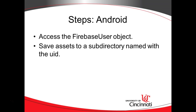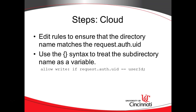The steps to create this: we need to access the Firebase User object on our application, which was provided when we created our Firebase Authentication system. Then we need to save our assets — our images or whatever we're saving to storage — into a path that includes the unique identifier of our logged-in Firebase user. That's on the application side. On the cloud side, we need to edit the rules to make sure that the path name matches the request.auth.uid. When we save something to Firebase Storage, a request object goes up, and there's request.auth.uid, which contains the unique identifier of the user making this request. We can compare that to the path that contains the same user identifier variable and make sure the two match.